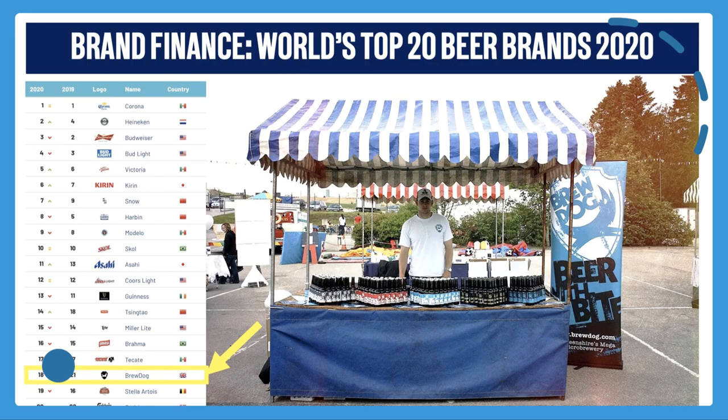There is real value in having a strong reputation for corporate social responsibility. CSR, profitability, and brand awareness are not mutually exclusive, especially in an age where consumers regard the provenance, responsibility, and sustainability of a business as pivotal in underpinning the brand. According to the latest Brand Finance rankings, BrewDog — a small Scottish manufacturer — is now in the top 20 beer brands in the world.